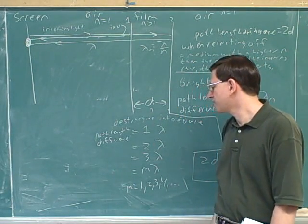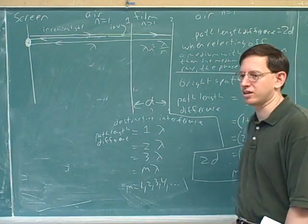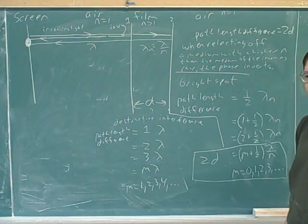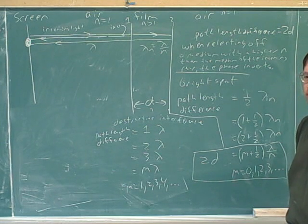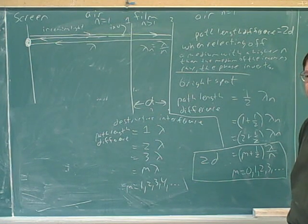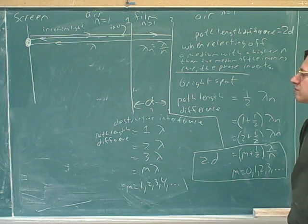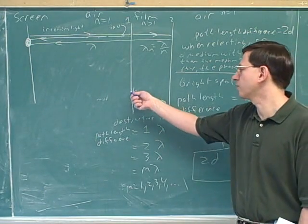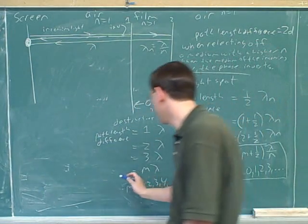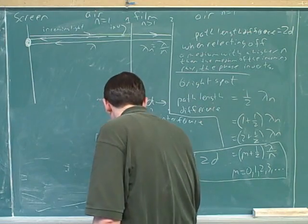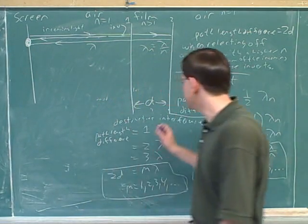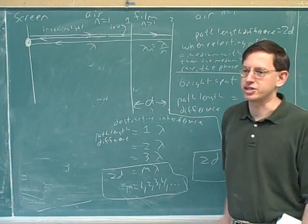And remember, we still have the same expression. How do we calculate the path length difference? How much longer is the path of one ray than the other ray? It's 2d. Right. Just by looking at the picture, we can see that one has to go d this way and d the other way. So now we found the equation for destructive interference in this situation.